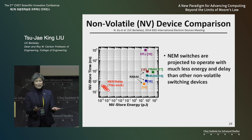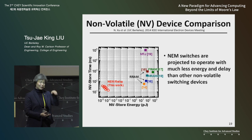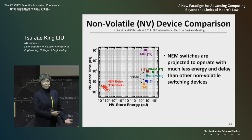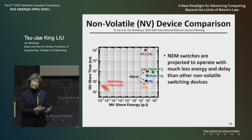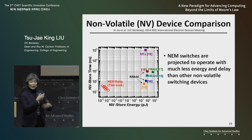One disadvantage of mechanical switches is that they're slower than transistors — we have to mechanically move something up and down, maybe switching on and off within 10 nanoseconds. A transistor turns on within picoseconds. So we really have to think about new architectures.